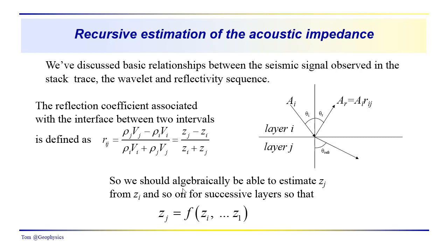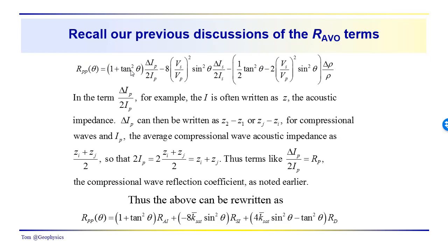Now in this expression here, one of our goals is to estimate what z sub j is for any particular layer. In this AVO representation, instead of a little r we've got a capital R. R_PP indicates that we're looking at the reflected compressional wave — incident compressional wave, reflected compressional wave.